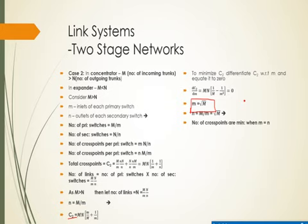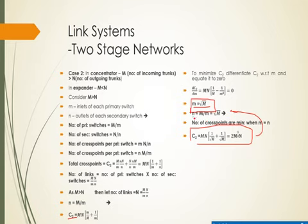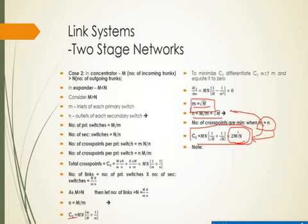Substituting back, the number of outlets n also equals the square root of M. Cross points are minimum when m equals n — this is the optimum solution. The minimum number of cross points is given by 2·M·√(M/N), specifically 2·M·√M·n. Practically, since taking the square root may yield a fractional value, we must choose integers close to √M that are also factors of M and N respectively.